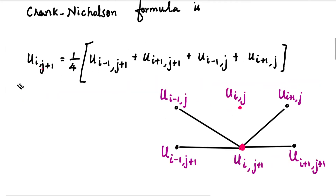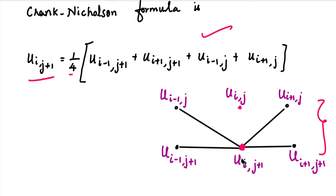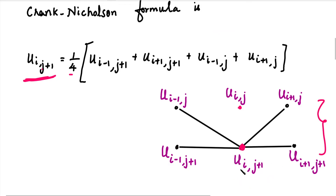Now let's look at the Crank-Nicolson formula. On the left-hand side is u_{i, j+1}. On the right-hand side, we use a stencil of four values: the center point u_{i, j+1}, the left point u_{i-1, j+1}, the right point u_{i+1, j+1}, the current row center u_{i,j}, the left u_{i-1, j}, and the right u_{i+1, j}.